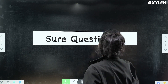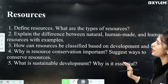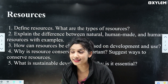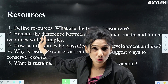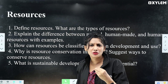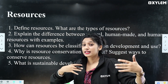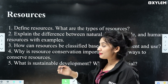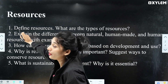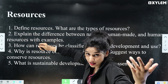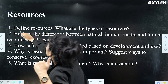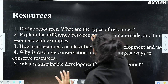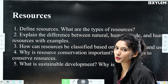Let's start with the first chapter: Resources. The first question asked is: what is the definition of resource? Everything that we need to satisfy our needs is a resource. You can write a definition of resource. Another question is: what are the types of resource?